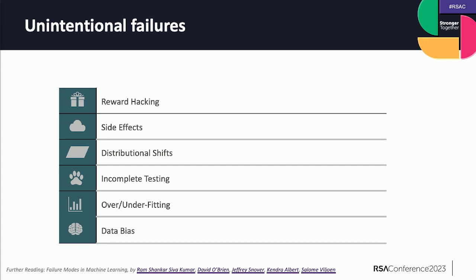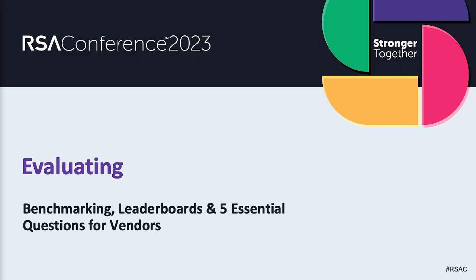Unintentional failures include reward hacking — like the dog story — and that does happen with systems. Distributional shifts over time happen when something has changed dramatically in the data and the system may not interpret it properly, so you're getting outputs that are not as useful. Incomplete testing is another big one: thinking you've totally tested a system when you haven't, and then it gets new information and responds inaccurately. The big thing is we don't know the answer to anything we're asking these systems in advance, except when we're training them.